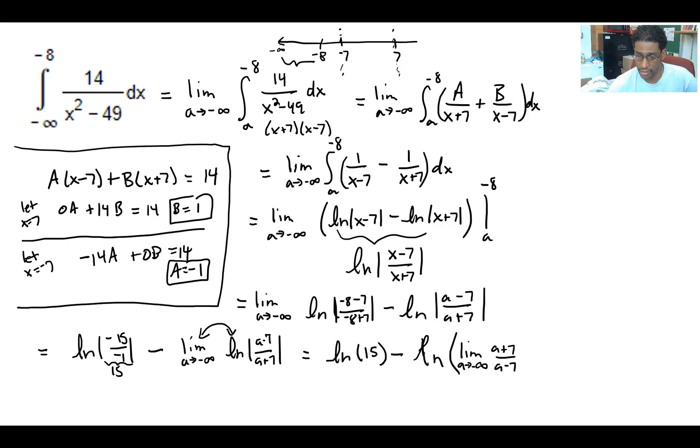And what's going to happen there is that's going to be a limit of one degree of the numerator equals the degree of the denominator, and so the limit as you go to plus or minus infinity is the ratio of their coefficients. And they both have one as their coefficients, and so that part goes to one as a goes to minus infinity.